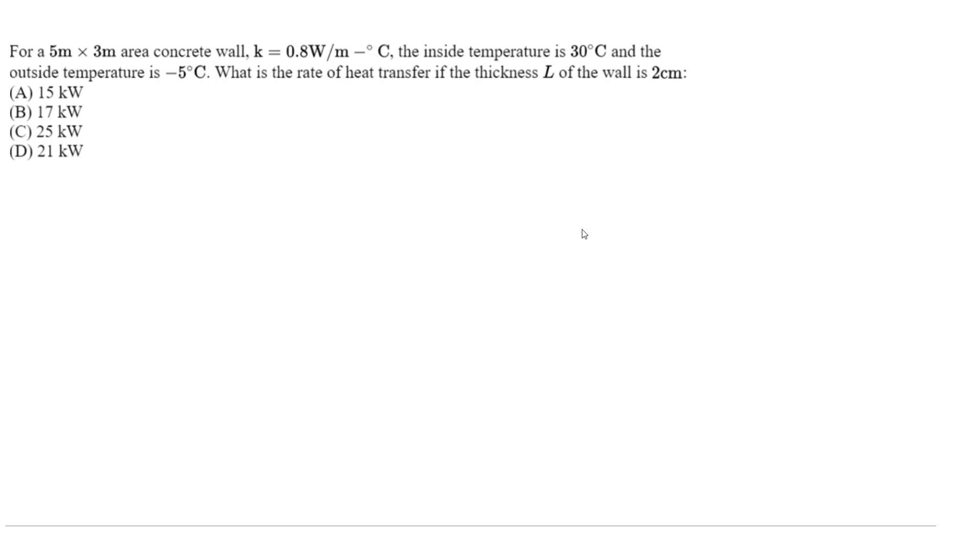For this question we're going to be looking at the law of conduction. We have a 5 meter by 3 meter area concrete wall, k value is 0.8 watt per meter per degree Celsius. The inside temperature is 30 degrees Celsius and the outside temperature is negative 5 degrees Celsius. What is the rate of heat transfer if the thickness L of the wall is 2 centimeters?